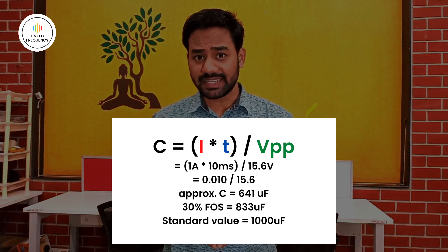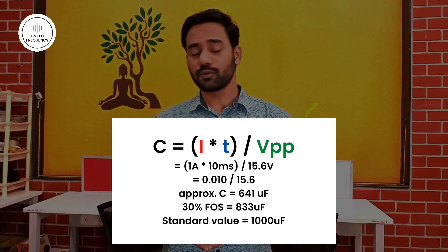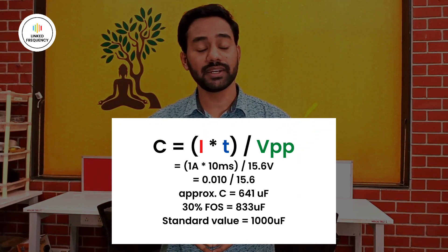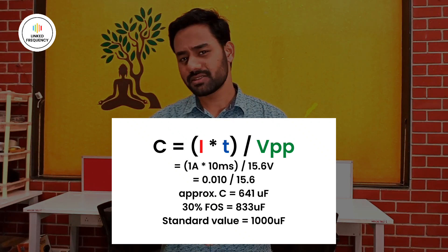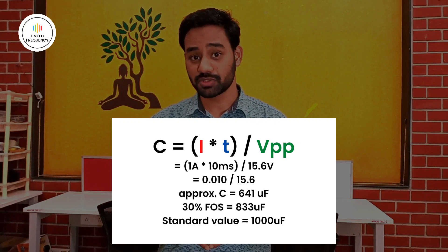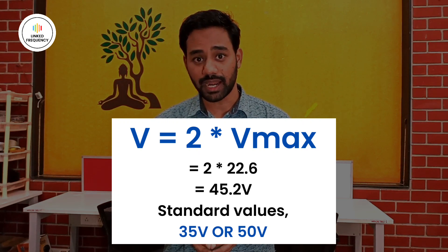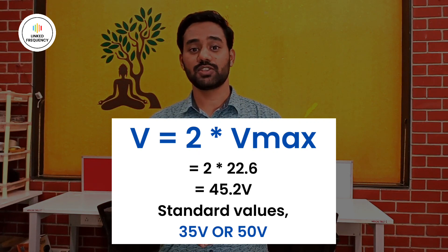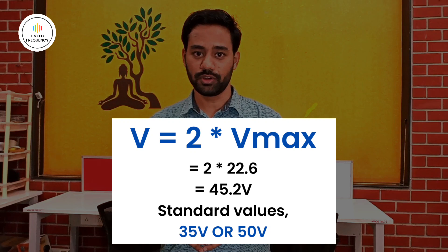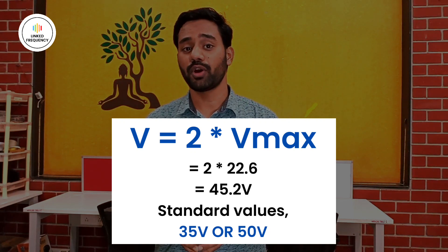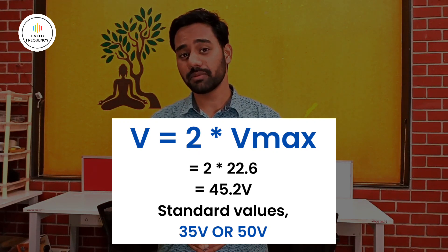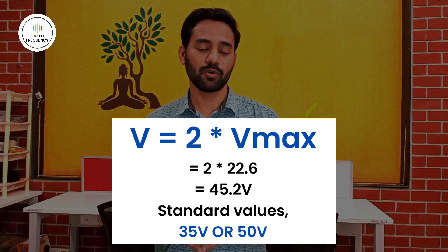Using the formula, the exact capacitance for this configuration comes to approximately 641 microfarads. Considering a 30% safety factor, it goes up to 833 microfarads, which is not a standard market value, so we use a 1000 microfarad capacitor. For the voltage rating, we double the maximum voltage across the capacitor — doubling 22.6V gives 44.2V — and since 44.2V capacitors are not available, we go with a 50V capacitor.